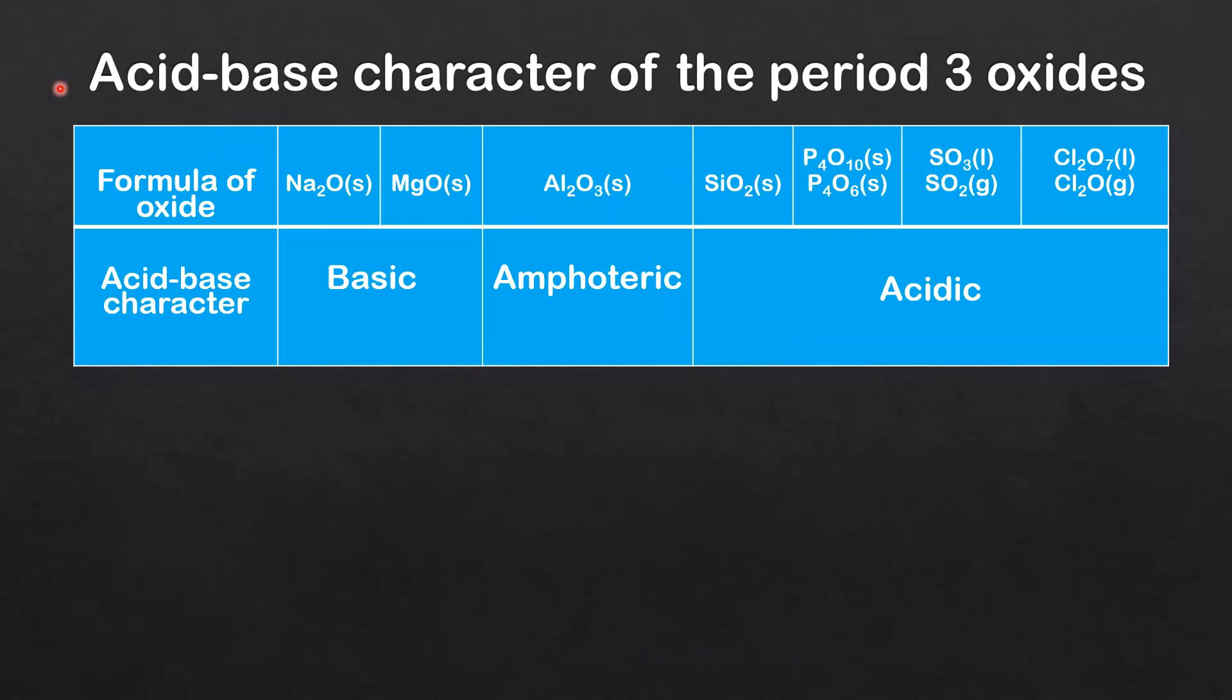Next we look at the acid-base character of the period 3 oxides. Again, we have the formula of the oxide on the top and the acid-base character on the bottom. Sodium oxide and magnesium oxide are basic. Aluminium oxide is amphoteric, which means it can act as both an acid and a base, and the remaining oxides are acidic.